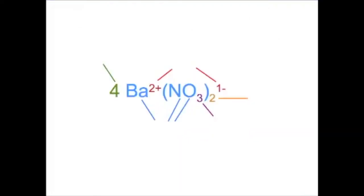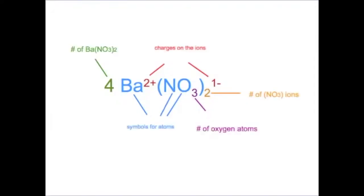There is one more thing we need to learn about when calculating the number of atoms in a chemical formula. That is the big number in the front called the coefficient. The coefficient tells us the total number of that compound or molecule.